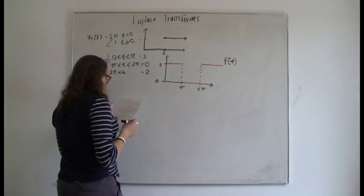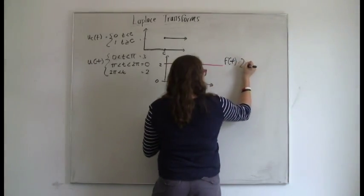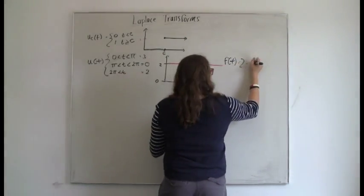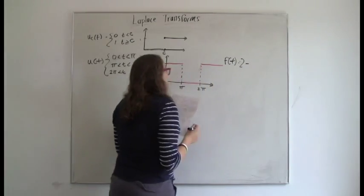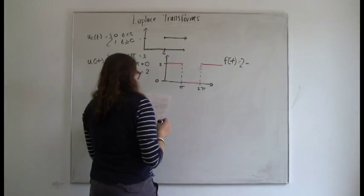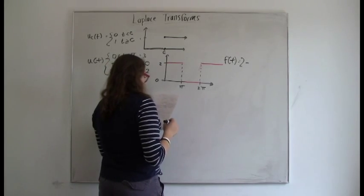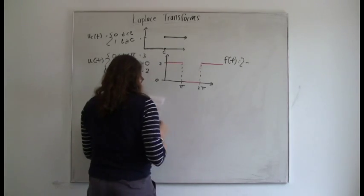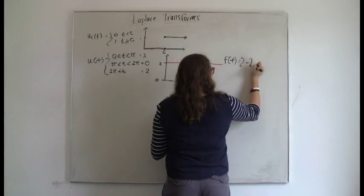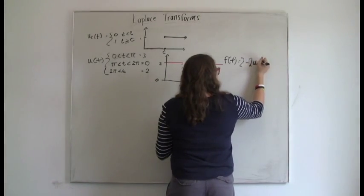So we could say f of t is equal to 2 minus, and then so it's u, the step function of t. But if we just did the step function of t, it would just go to 1 once it reaches c, and we want it to go to 2, so we need to multiply it by 2. So we have 2 times u sub pi of t.